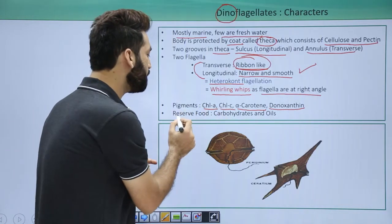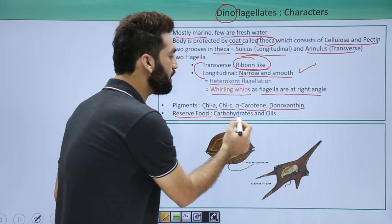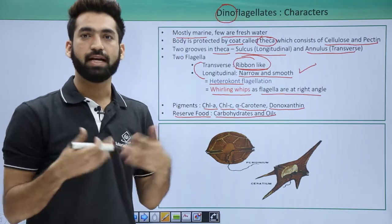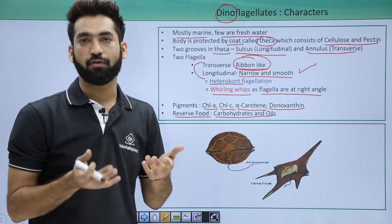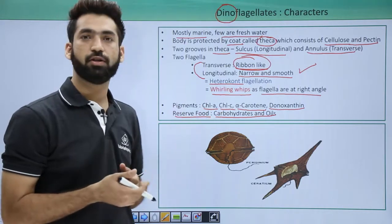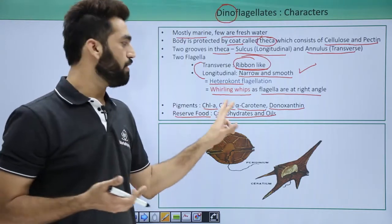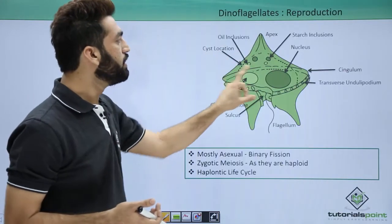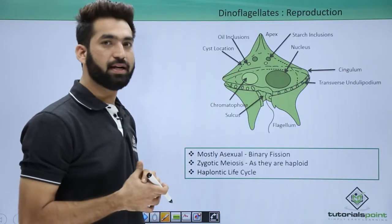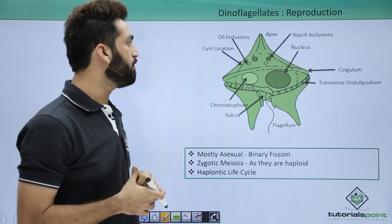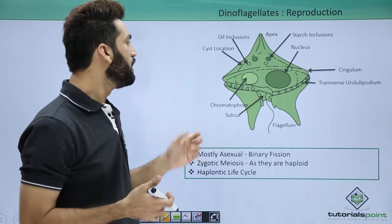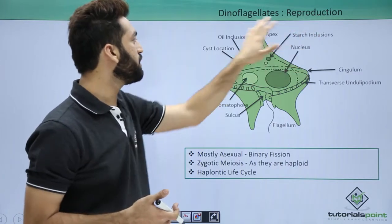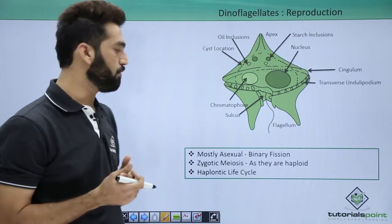Their reserve food is in the form of carbohydrates and oil. Looking at the structure of a dinoflagellate, you can see a well-defined nucleus, the flagella, the sulcus, and inclusion bodies — specifically starch inclusions and oil inclusions — which serve as food reserves.